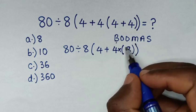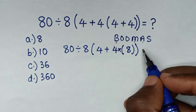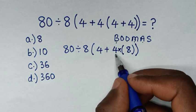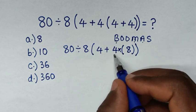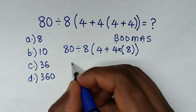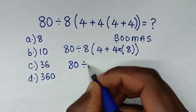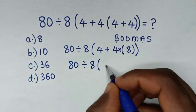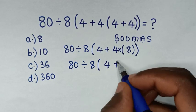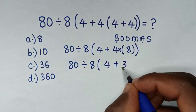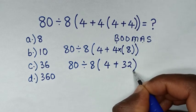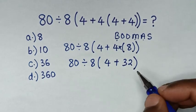So deal with this multiplication of 4, 4 times 8 first, which is 32. So it will be 80 divided by 8, bracket 4 plus 4 times 8 is 32, bracket. Then after we deal with this multiplication...